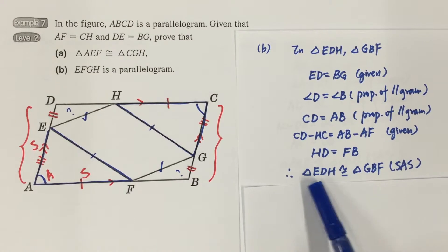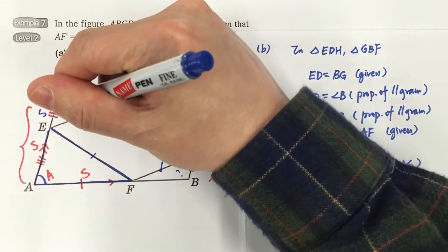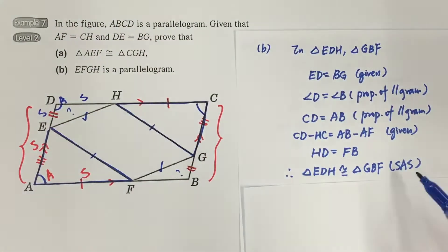And therefore, triangle EDH is congruent to triangle GBF, and the reason is SAS, again SAS.